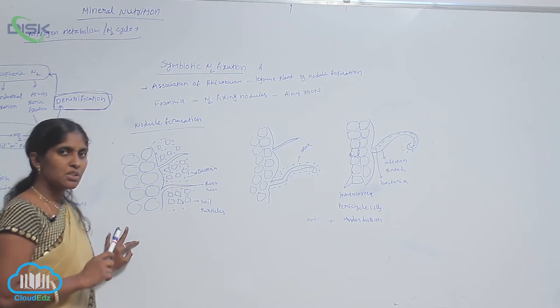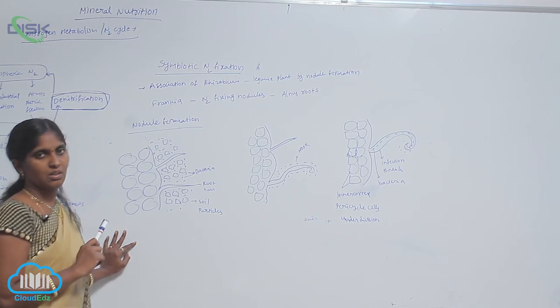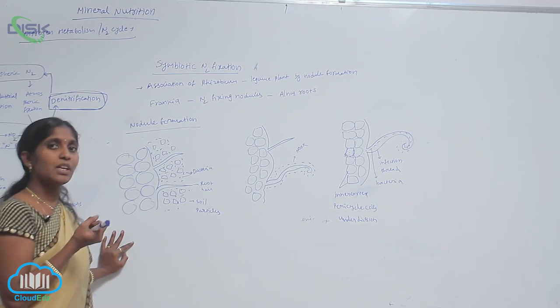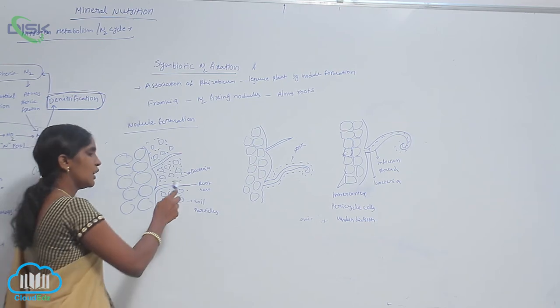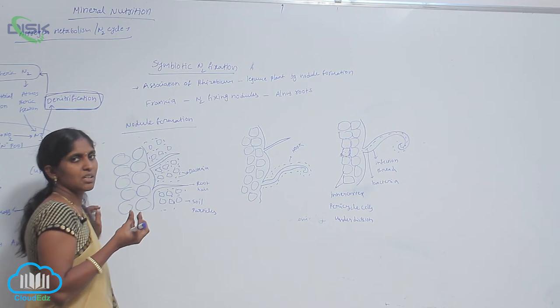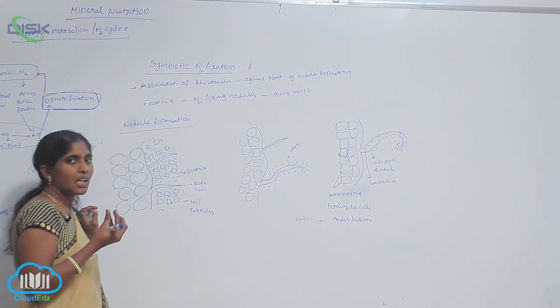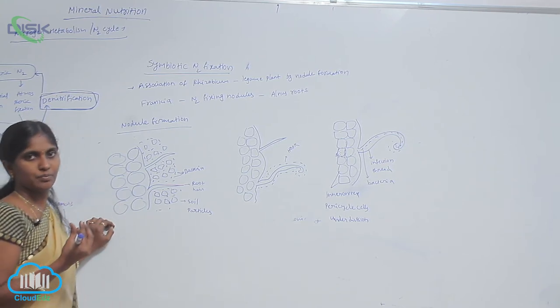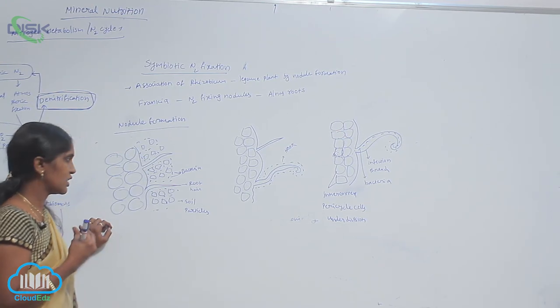During the nodule formation, the first step is attraction. The root can attract the rhizobium bacteria. The root can secrete some chemical substances like amino acids, like sugars. They attract the bacterium towards the root hairs. That is the attraction.